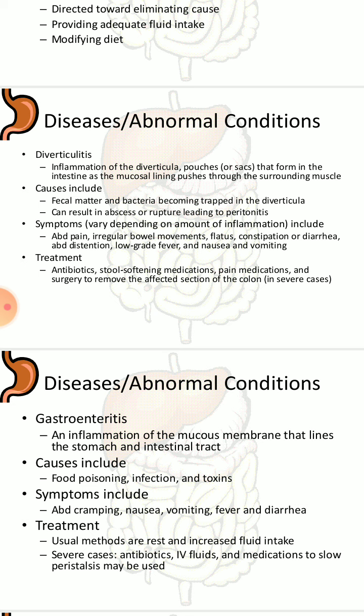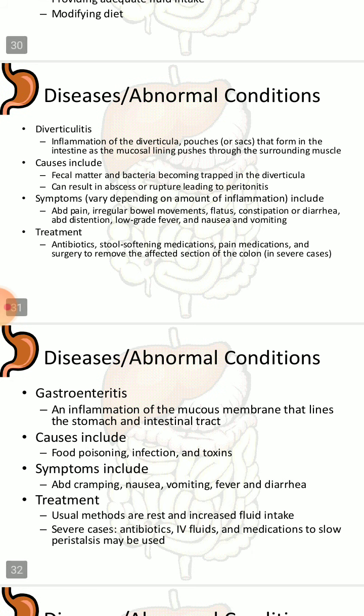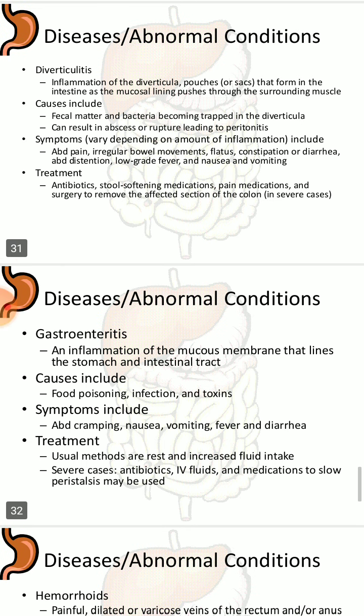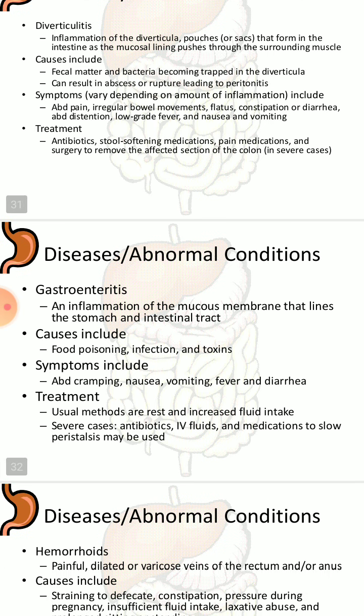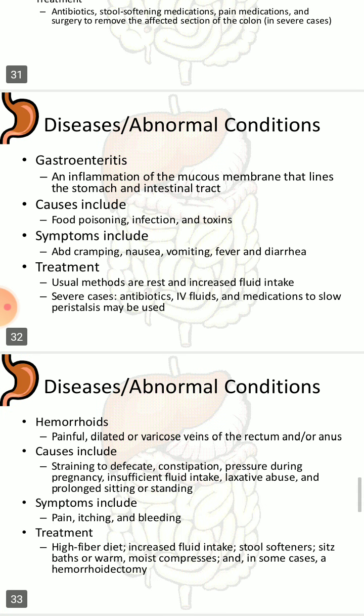Diverticulitis is inflammation of diverticula — pouches or sacs that form in the intestine as the mucosal lining pushes through the surrounding muscle. Fecal matter and bacteria becoming trapped in the diverticula can result in abscess or rupture leading to peritonitis. Symptoms include abdominal pain, irregular bowel movements, flatulence, constipation or diarrhea, and abdominal distension. Treatment includes antibiotics, stool-softening medications, and pain medications.